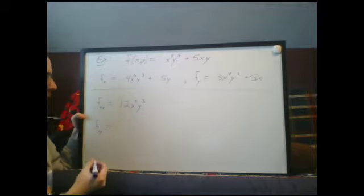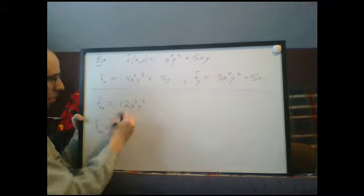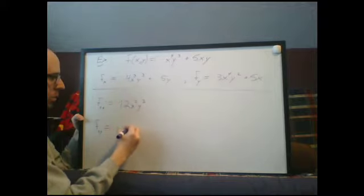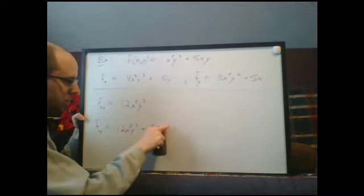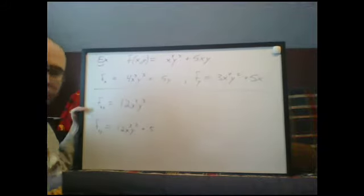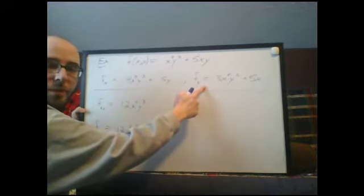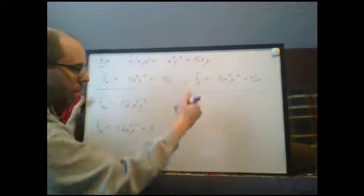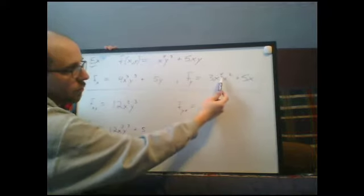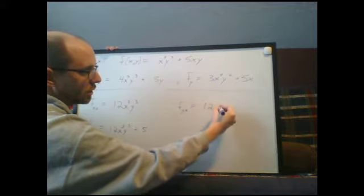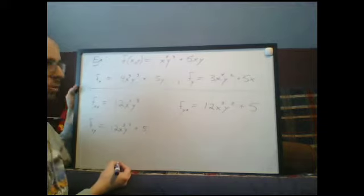f_xy is the derivative of f_x with respect to y. Bringing the 3 down from y³ gives 12x³y², plus the derivative of 5y is 5. So f_xy = 12x³y² + 5. For f_yx, we take f_y and differentiate with respect to x: the 4 comes down from x⁴, giving 12x³y², and the derivative of 5x is 5. So f_yx = 12x³y² + 5.